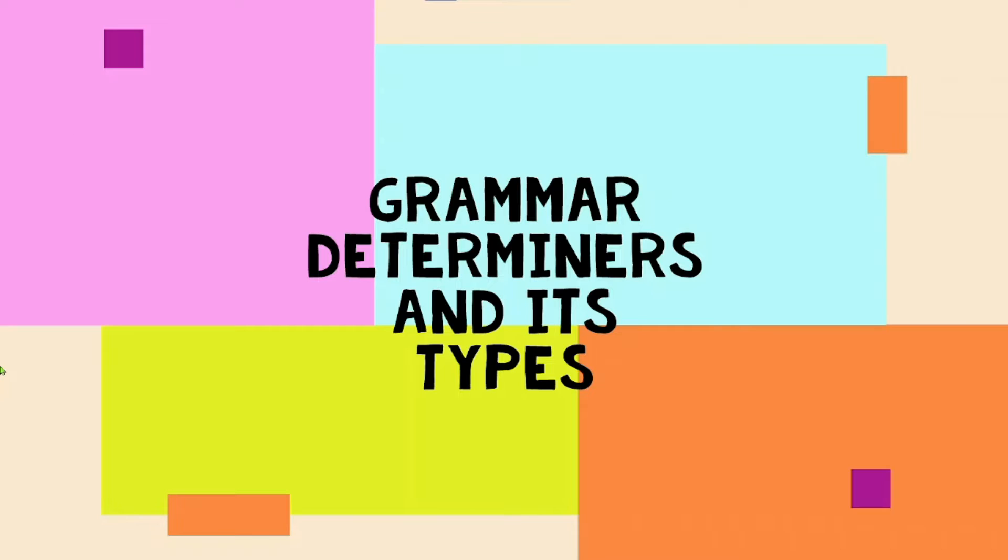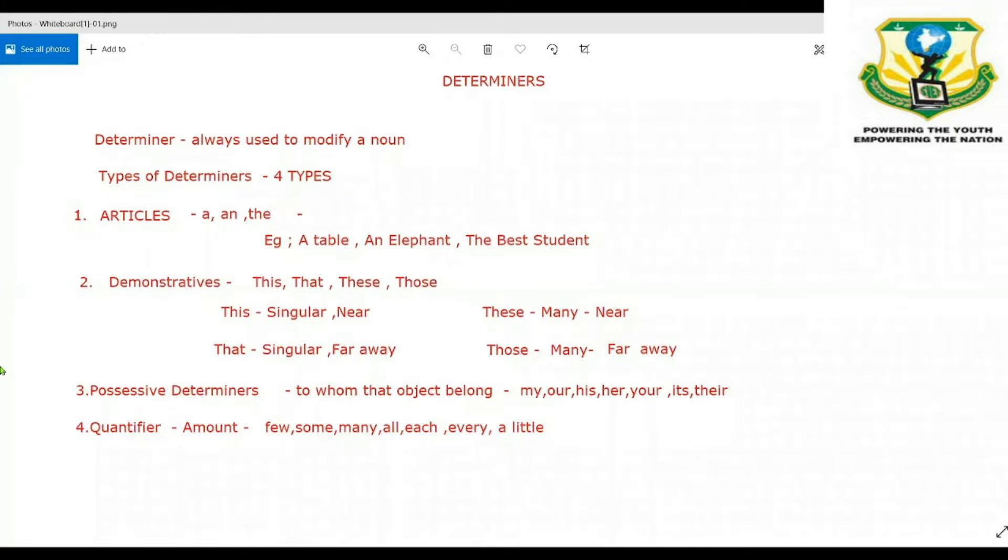Happy day students. Today, we started a new grammar topic which is determiners. Determiners are basically words which we use to modify a noun. There are four types of determiners.